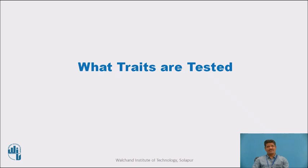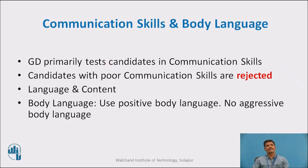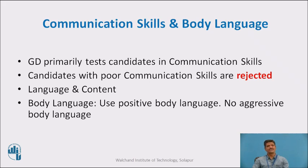What skills are tested? First, communication skills and body language. A GD primarily tests candidates in communication skills — candidates with poor communication skills are rejected. Whenever the HR manager conducts a group discussion, his prime objective is to check your communication skills. You should develop excellent communication skills. Body language is also important because you speak through your body language, so you need to show positive body language in a group discussion.